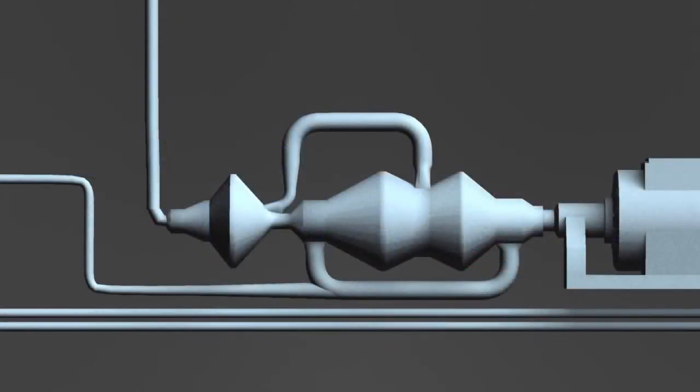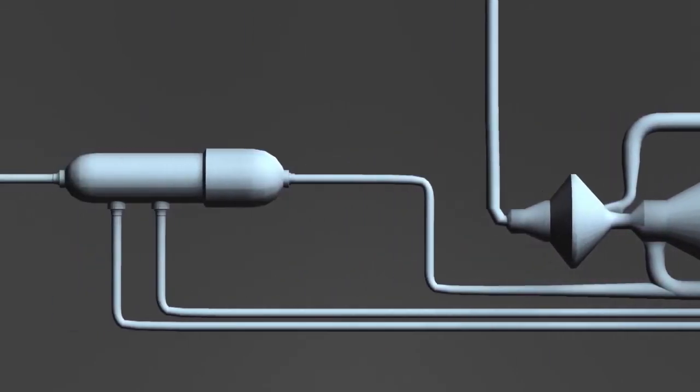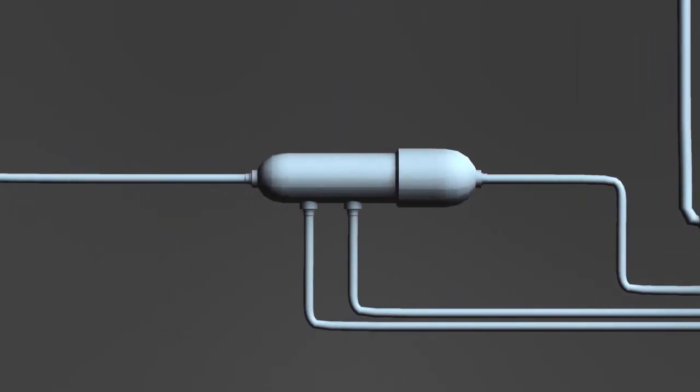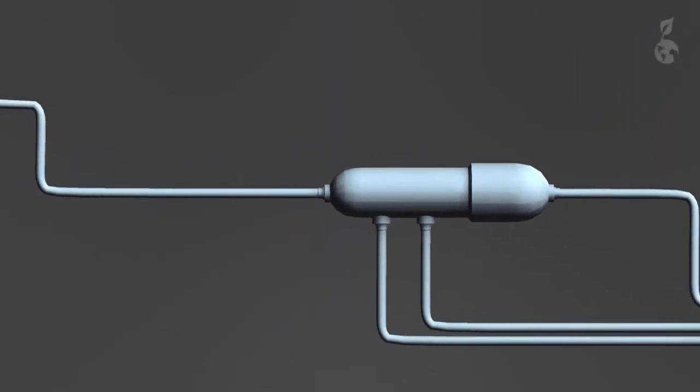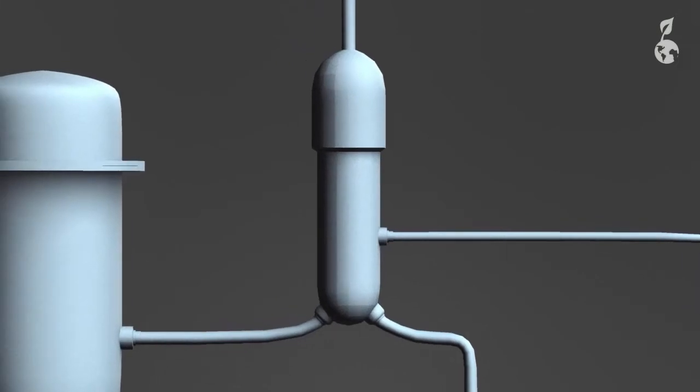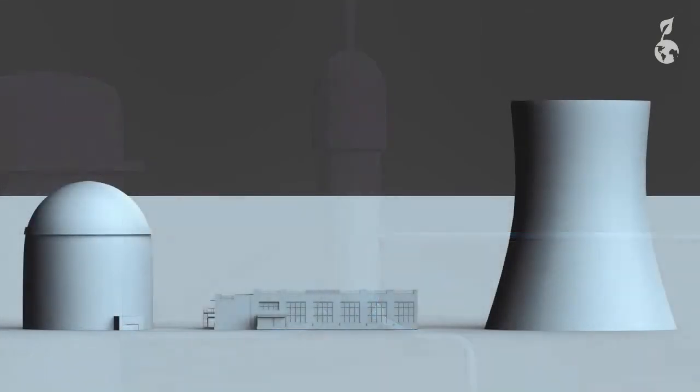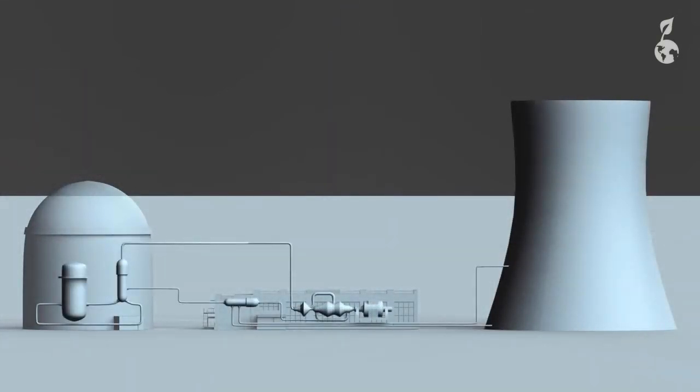The steam is converted again into liquid form in a condenser and then returned back to the steam generator. The water needed for this often comes from an adjacent river or is cooled in a cooling tower. The water circulation systems are always kept separate from one another.